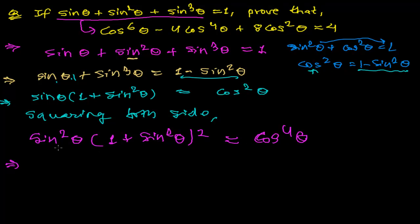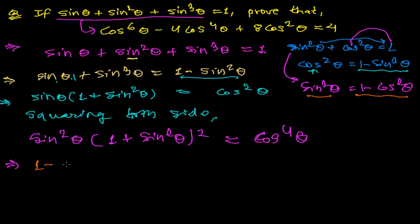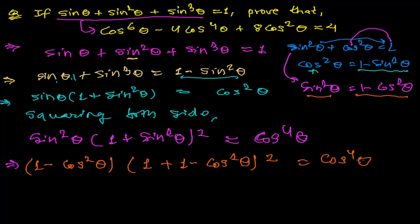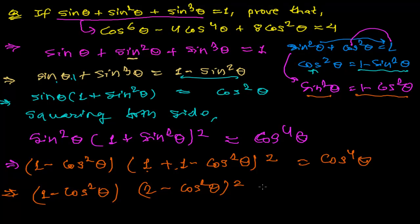From the identity, sin²θ = 1 - cos²θ. Substituting on both sides: (1 - cos²θ) · (1 + (1 - cos²θ))² = cos⁴θ, which simplifies to (1 - cos²θ) · (2 - cos²θ)² = cos⁴θ.